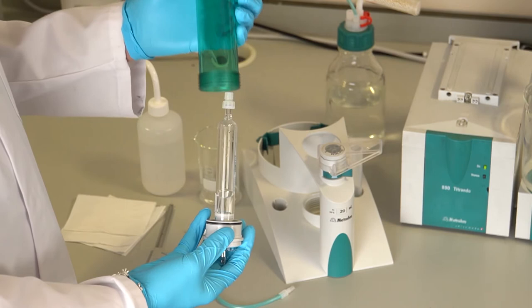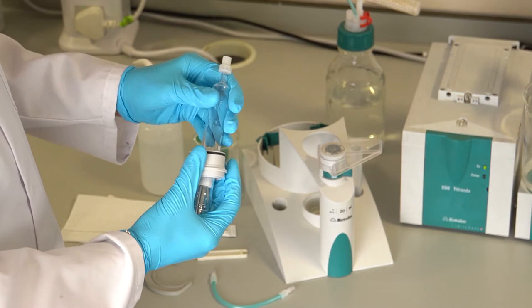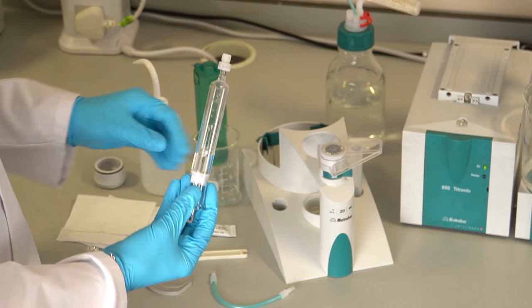Inspect the o-rings for damage and replace if required. Check whether the glass cylinder has been attacked, for example by aggressive alkalis, and also check whether solids have precipitated out.